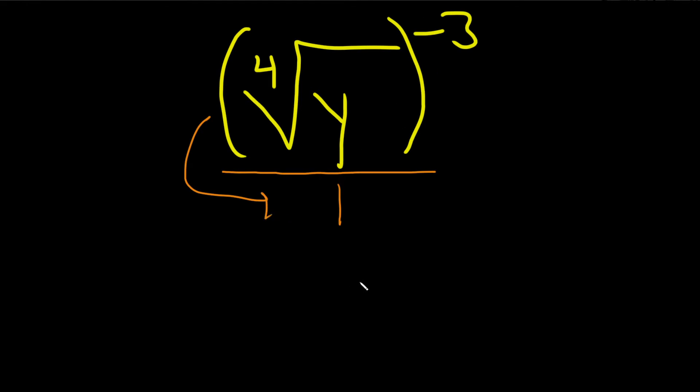When we do that we're left with a 1 up top and on the bottom we'll have the fourth root of y, and then this whole thing here is being cubed.